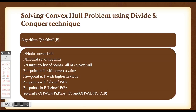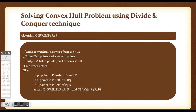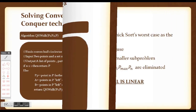This is the Quick Hull algorithm we just discussed. It finds the set of points above p1-p2 and the set of points below p1-p2, then finds the upper hull and lower hull by invoking the QHWalk procedure twice. This is a continuation of the algorithm just described.